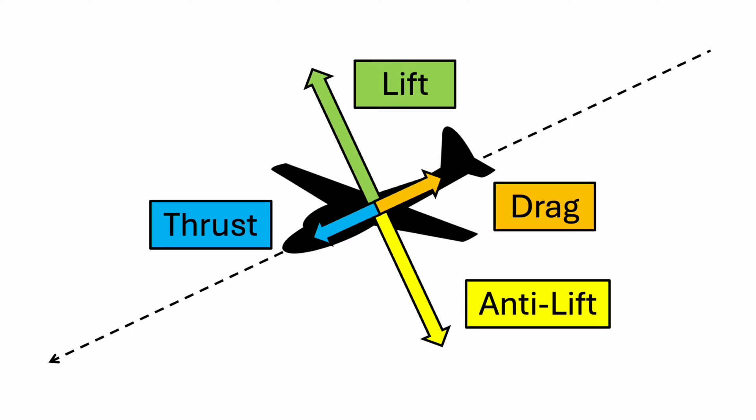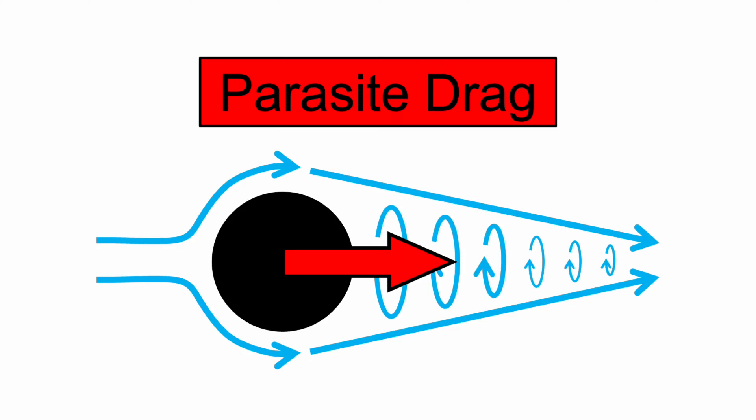In our earlier videos, we learned that drag is a force that acts on our planes in the opposite direction that they're flying. We also learned about parasite drag, which comes from the pressure of the air on an object as it is deflected around it, as well as from friction between the air and the surface of the object.